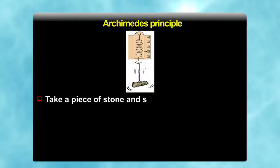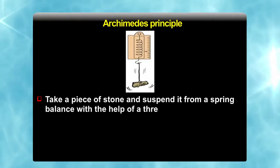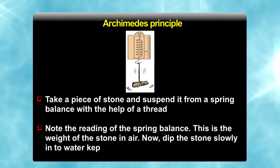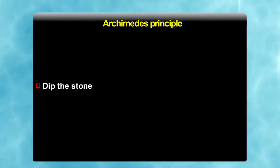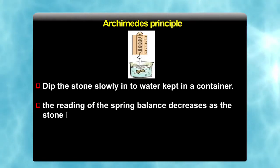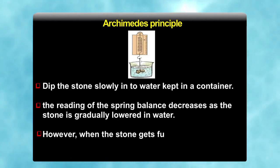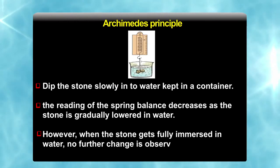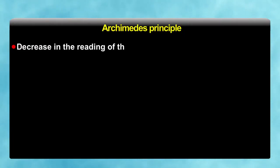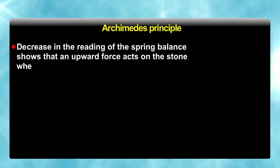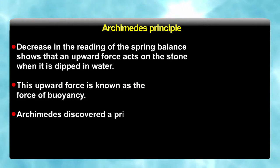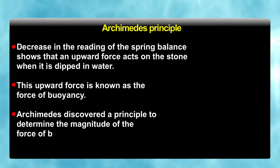There is a principle given by Archimedes based on this activity. That is take a piece of stone. Suspend it from a spring balance with the help of a thread. Note the reading of spring balance. This is the weight of stone in air. Now dip the stone slowly into water kept in a container. The reading of spring balance decreases as the stone is gradually lowered in water. However, when the stone gets fully immersed in water, no further change is observed in the reading of spring balance. Decrease in reading of spring balance shows that an upward force acts on stone when it is dipped in water. This upward force is known as the force of buoyancy. Archimedes discovered a principle to determine the magnitude of force of buoyancy.